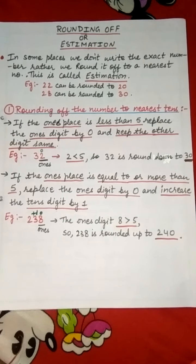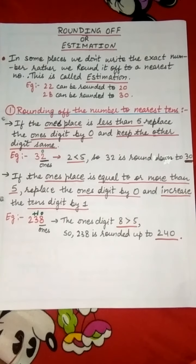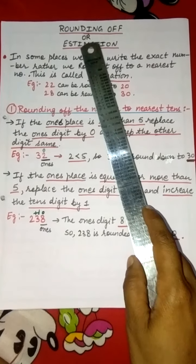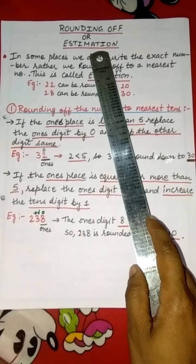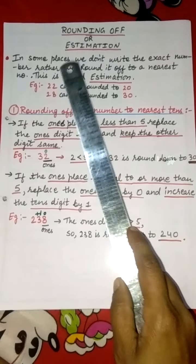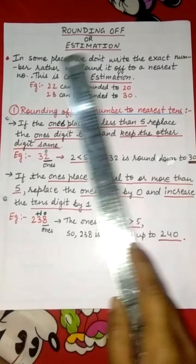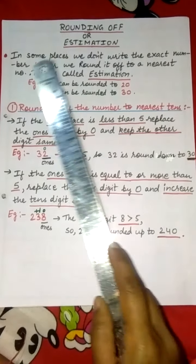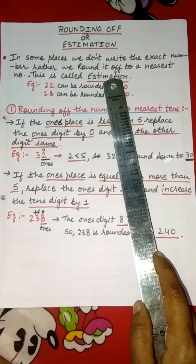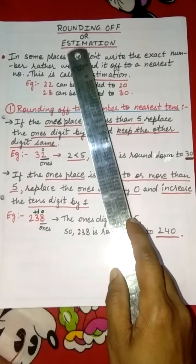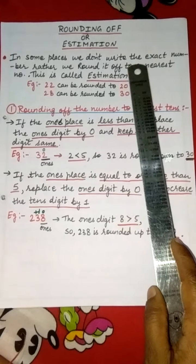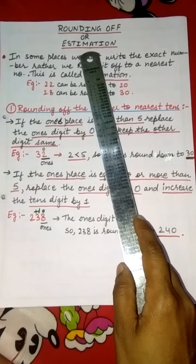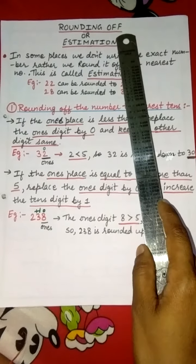Good morning students, welcome to your maths class. Today we are going to discuss rounding off or estimation. In some places, we don't write the exact number. Rather, we round it off to the nearest number. This is called estimation. We round off the number to the nearest number and then write that number. This process is called estimation or rounding off.